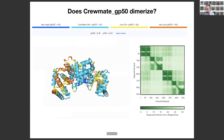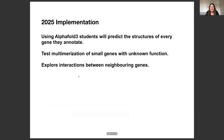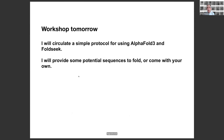I can go through the rest of these examples tomorrow. The plan for implementation next year is to use AlphaFold3, which will allow us to test multimerization more easily of smaller genes, as well as explore protein-protein interactions between neighboring genes. I'm running a workshop tomorrow where I will circulate a simple protocol for using AlphaFold3 and FoldSeek, and I can provide some potential sequences that people could fold, or you could come with your own.